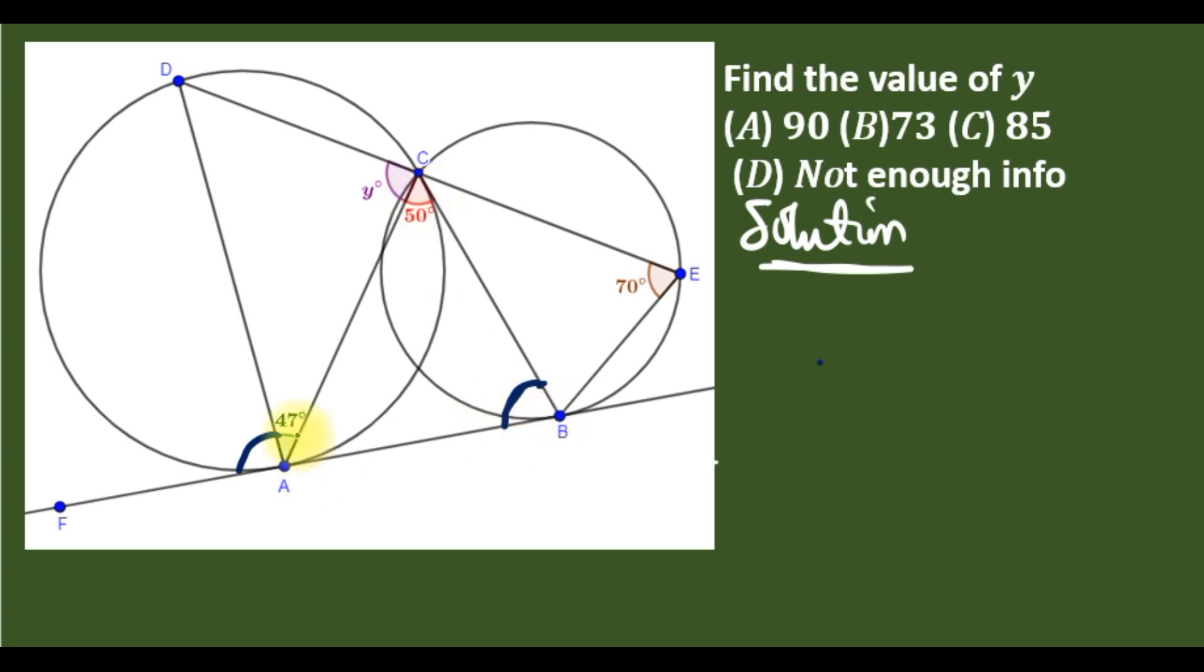By exterior angle theorem, if you add these angles, it gives the total angle. By alternate segment theorem, we can get these two angles: this is 70 degrees and this is y degrees.